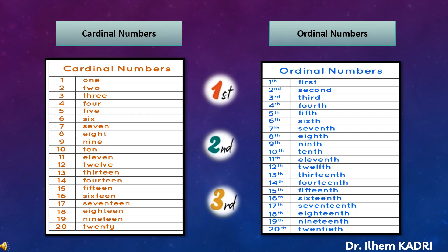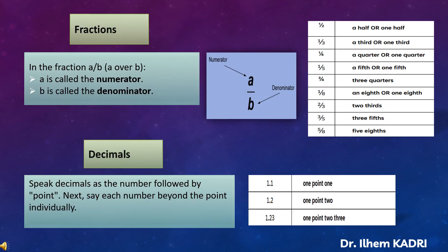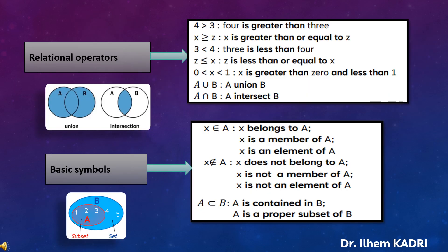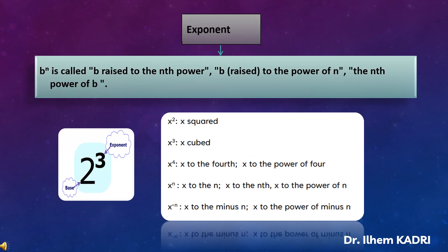Here we present the two kinds of numbers, which are cardinal numbers and ordinal numbers. We use ordinal numbers to talk about the order of things or to define a thing's position in a series. We also talk about fractions and decimals with examples, and give important relation operators with basic symbols, and explain the meaning of exponents with examples.